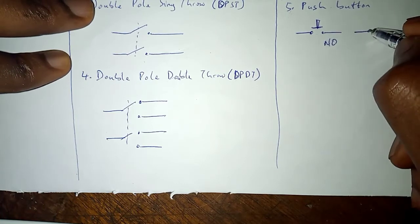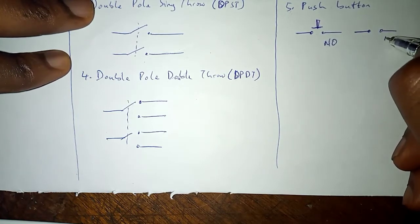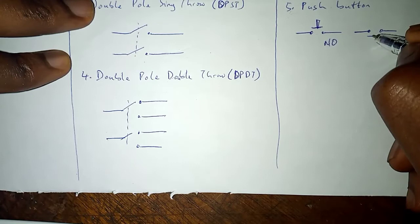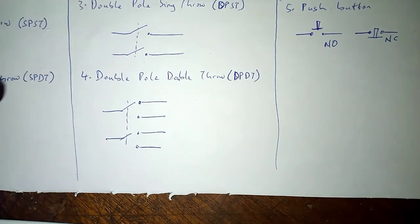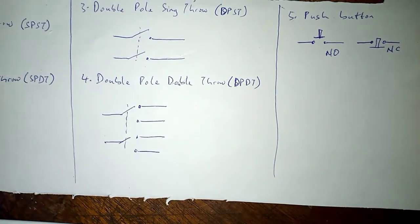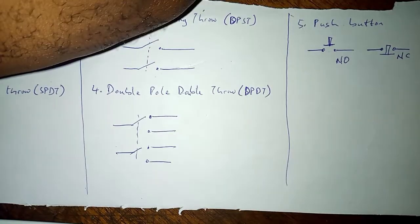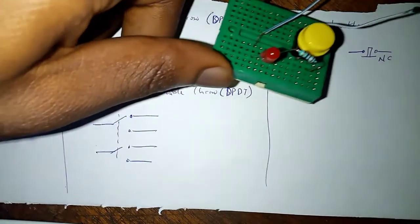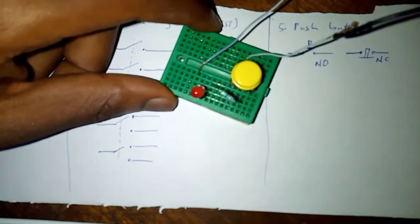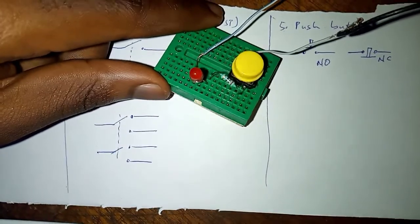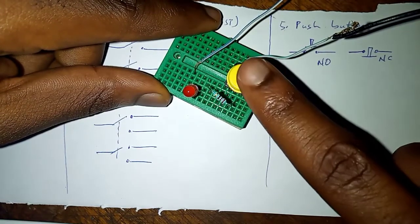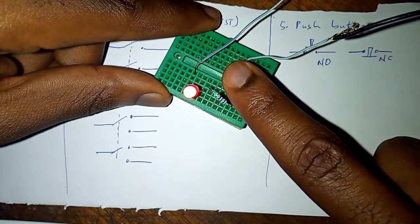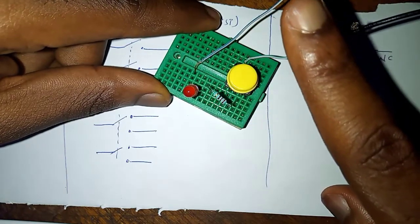And there is the variation of it that is normally closed. When it's pushed, it's opened, and when it's released, it closes. So I built a simple circuit here to show you a normally open switch in operation. The light is off because it's normally open. When it's clicked, it comes on. When it's released, it goes off.